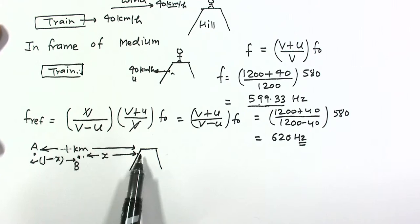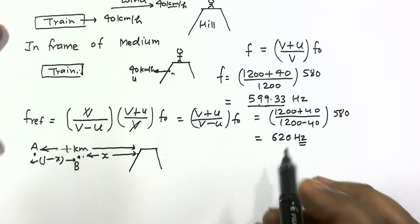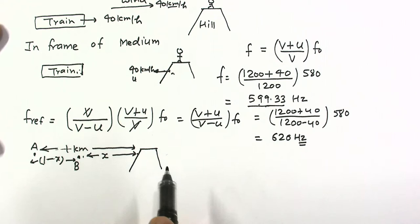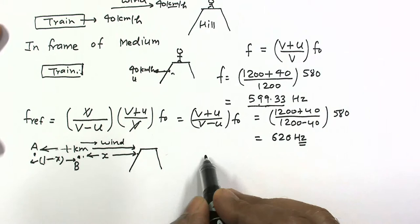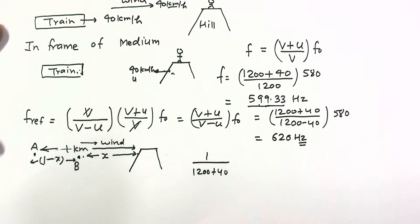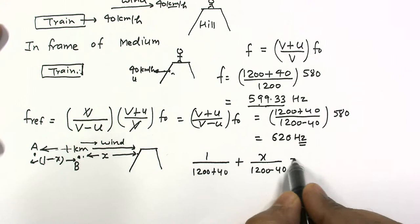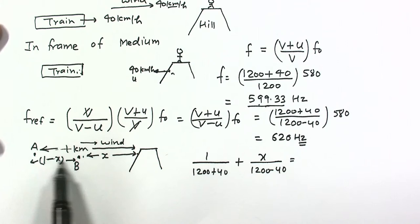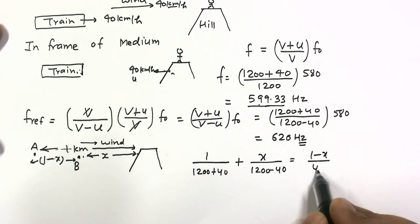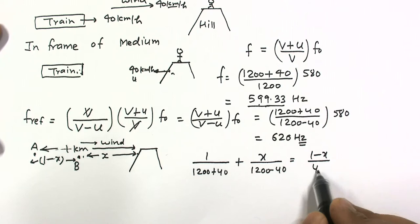Now equating the times: the time for sound to go from A to the hill is 1 divided by (1200 plus 40), since the wind aids the sound going towards the hill. When the sound comes back, the wind opposes it, so the net velocity is 1200 minus 40. The time for the train to travel from A to B equals (1 minus x) divided by 40. Setting the total sound travel time equal to the train travel time and solving, x comes out as 29 by 31 km.